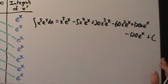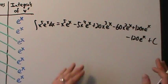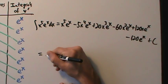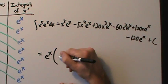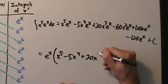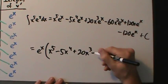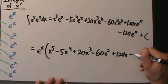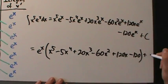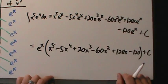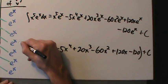If you want, you can factor out the eˣ and write the answer as eˣ times (x⁵ − 5x⁴ + 20x³ − 60x² + 120x − 120) plus C outside the parentheses. So that's our answer: the integral of x⁵eˣ dx equals that expression.